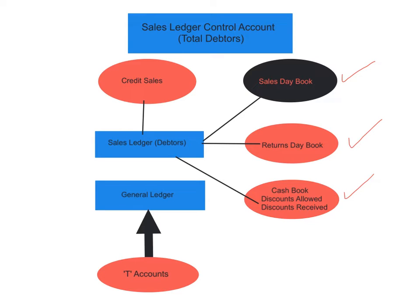Accountants use data from the books of original entry to create the T-accounts in the sales ledger, which contains all the debtor T-accounts. Any corresponding debit or credit entries are recorded in the general ledger. The debtor account is recorded in the sales ledger, while all other accounts — such as bank accounts, discounts allowed and received, and returns — are recorded in the general ledger.